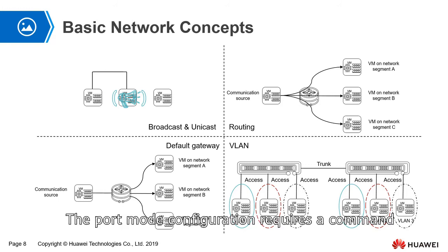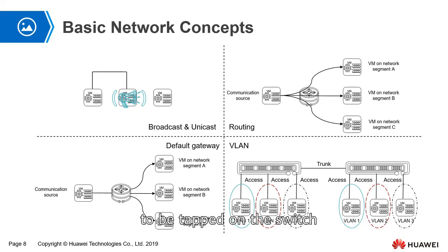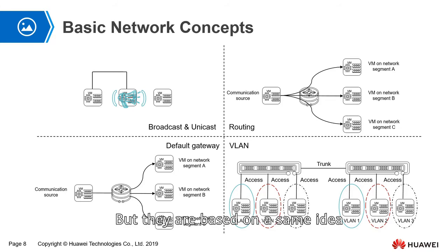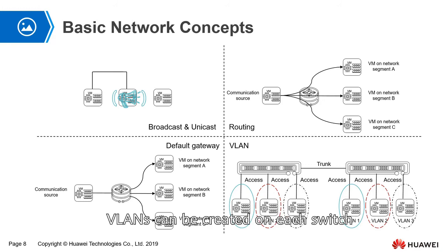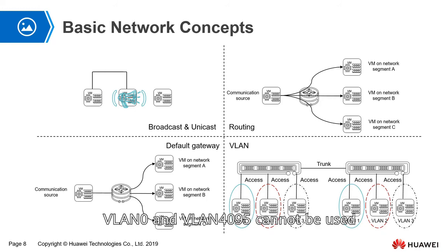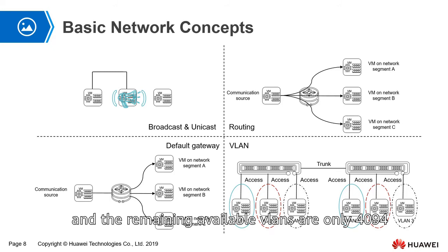Port mode configuration requires commands to be entered on the switch. Switch commands vary from vendor to vendor, but they are based on the same idea: only 4,096 VLANs can be created on each switch. Among them, VLAN 0 and VLAN 4,095 cannot be used, so the remaining available VLANs are only 4,094.